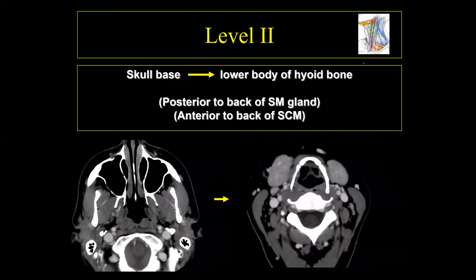The level 2 lymph nodes run from the skull base down to the level of the hyoid bone. When we draw the line connecting the back of the submandibular gland, everything anterior was level 1, but everything posterior to this is level 2. So level 2 lymph nodes run from the skull base down to the hyoid bone, and everything in that hatched area is the level 2 lymph node group.